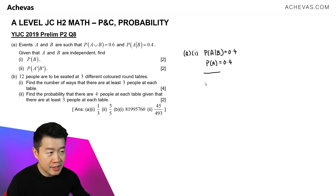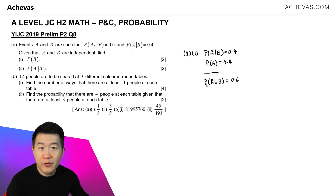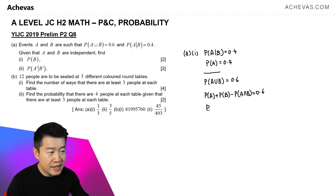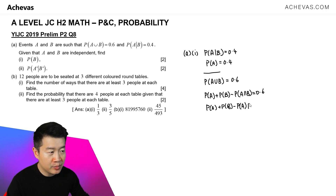Then I'm going to make use of what is given to us: the probability of A union B is equal to 0.6. Applying the formula for probability of A union B, we have probability of A plus probability of B minus probability of A intersect B, and this is equal to 0.6. And since A and B are independent, probability of A intersect B is rewritten as probability of A multiplied by probability of B. So this is equal to 0.6.